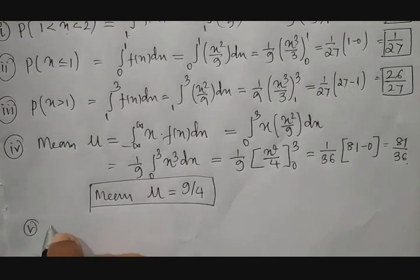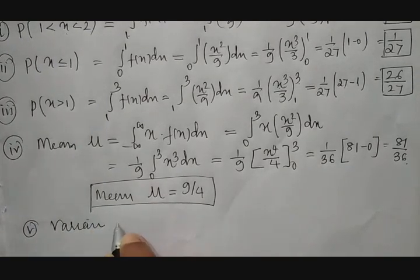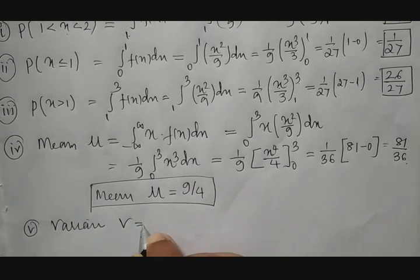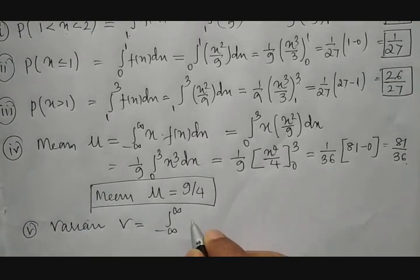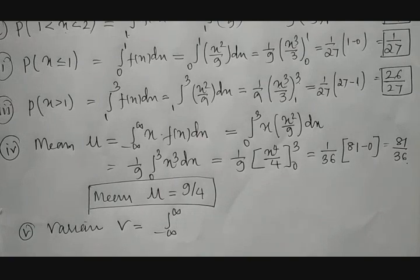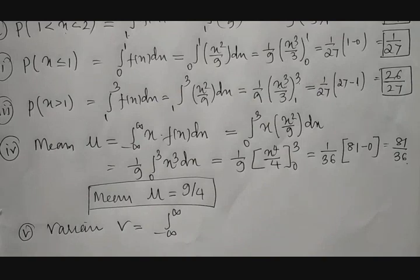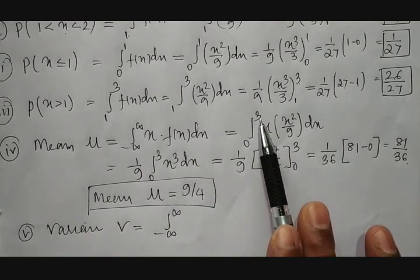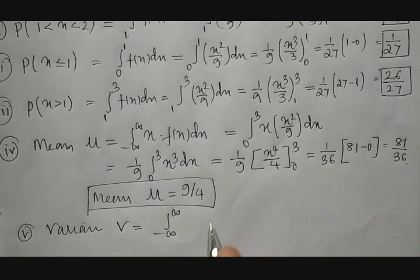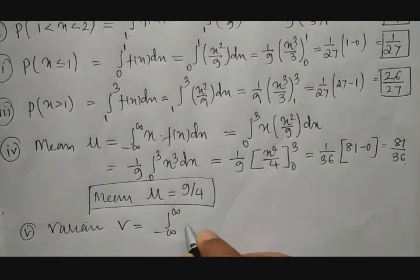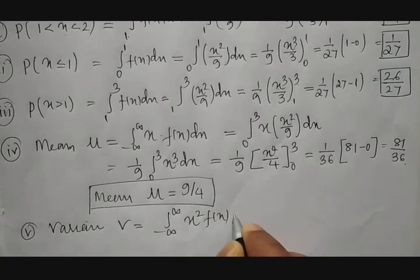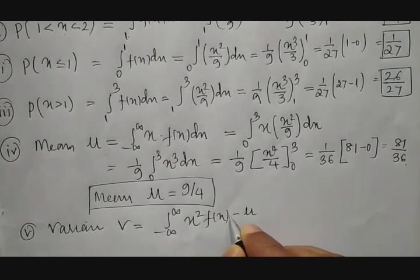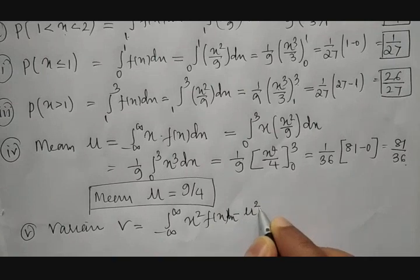Finally, the variance. The formula is V = integral from minus infinity to plus infinity of x²·f(x) dx − μ². We use the alternate formula since x − μ squared would be difficult to expand. The limits are 0 to 3, f(x) = x²/9, and μ = 9/4, so μ² = 81/16.